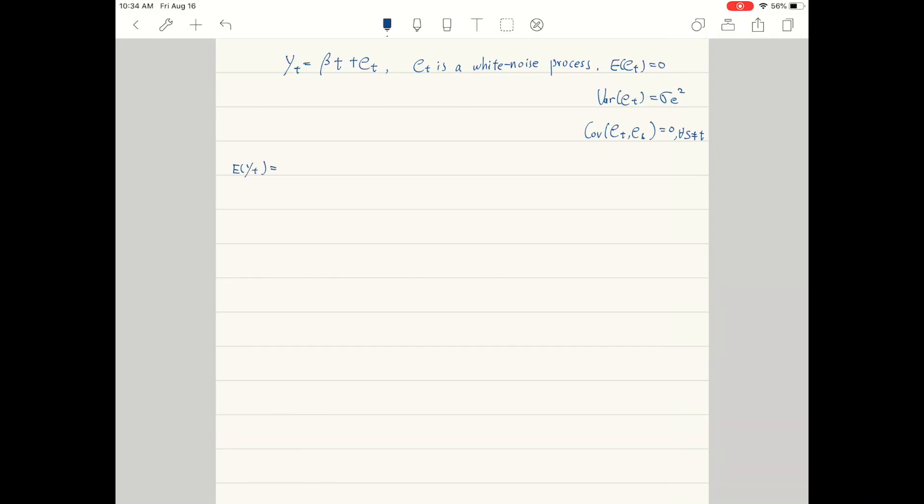Finally, let's look at a difference stationary process. Yt is equal to beta times t plus a white noise process et. Since its mean is a function of time t, so it's not covariance stationary.